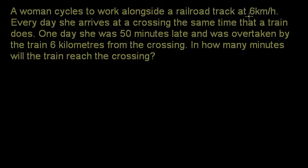That's an interesting piece of data. Every day she arrives at a crossing the same time that a train does. One day she was 50 minutes late and was overtaken by the train 6 kilometers from the crossing. In how many minutes will the train reach the crossing?